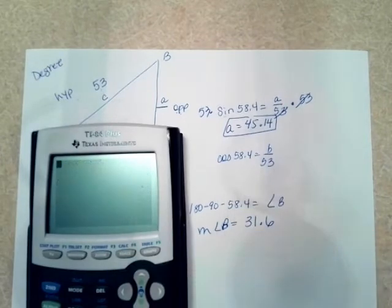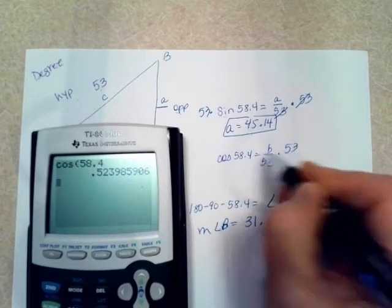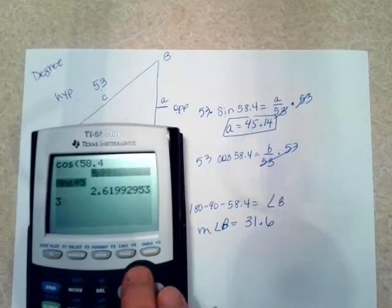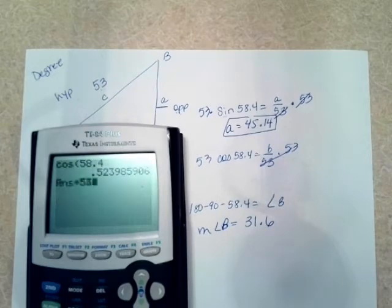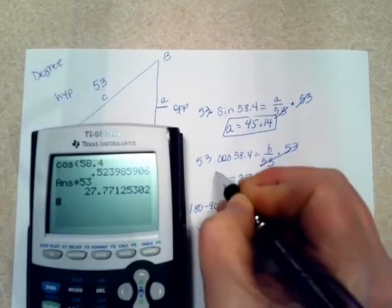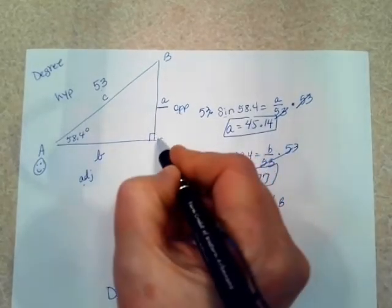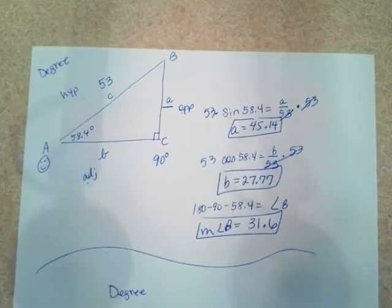We'll do a very similar process here. Cosine of 58.4 is 0.5239. I'm going to multiply by 53 on both sides. These are going to cancel. So I'm going to go ahead and multiply this by 53. Let me go back and get that number. Mess that up. Let's do it again. Cosine 58.4 times 53. So that gives me B as 27.77. So I have found A and B, the measure of angle B. We know C is 90 degrees. So we know all the parts to that triangle.